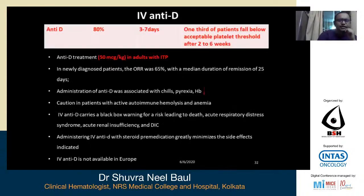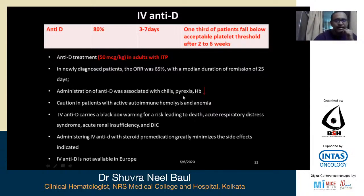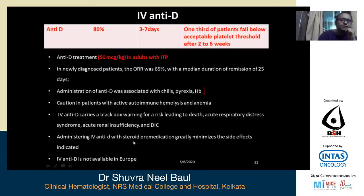IV anti-D has a response rate of 80%; onset of action is three to seven days. One-third of patients have an exceptional platelet threshold after two to six weeks. The anti-D dose has been recently modified to 50 mcg/kg from the traditional 75 mcg/kg, with an overall response rate of 65% and a median duration of emission of 25 days. Side effects include chills, pyrexia, and decreased hemoglobin. Important requirements: the patient must be blood group Rh positive, not splenectomized, and have no active autoimmune hemolysis. There is a black box warning for risk of death due to acute respiratory failure, acute renal insufficiency, and DIC. IV anti-D is not available in Europe.